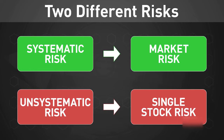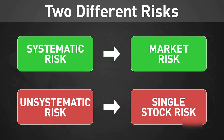Unsystematic risk, or single-stock risk, is very different. This is the risk that is unique or individual to one specific stock. Therefore it is avoidable, and it only becomes relevant if you happen to have a position on in that particular equity.